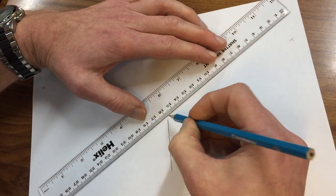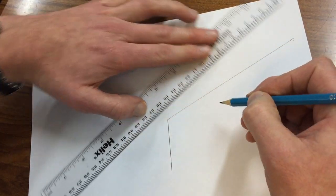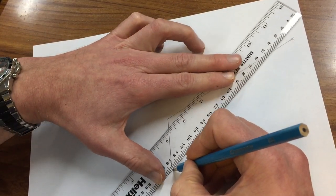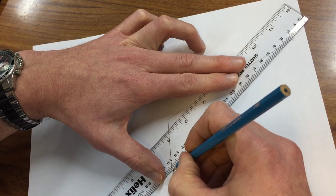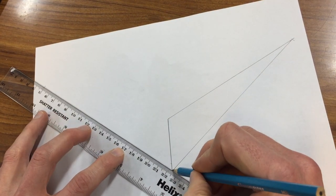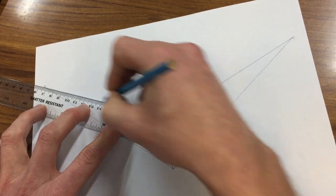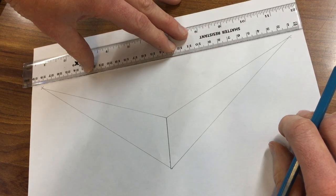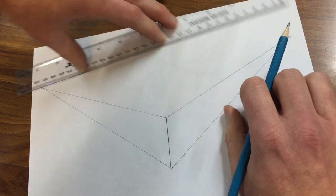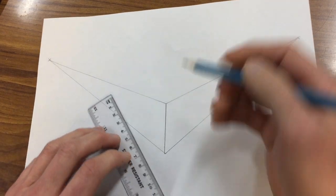The idea is these vanishing points form like a horizon, and as things move towards the horizon they shrink. So these guidelines disappear into those vanishing points. Imagine if my ruler here was the horizon—things get smaller as they disappear as they get further away.